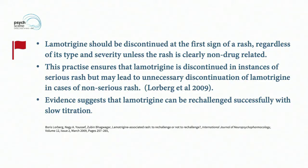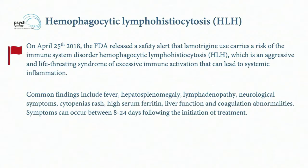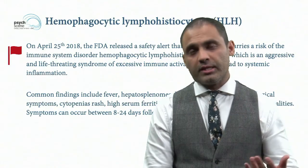One additional important point: there is a condition known as hemophagocytic lymphohistiocytosis (HLH). On April 25th, 2018, the FDA released a safety alert that Lamotrigine use carries the risk of this immune system disorder — an aggressive and life-threatening syndrome of excessive immune activation that can lead to systemic inflammation. Common findings include fever, hepatosplenomegaly, lymphadenopathy, neurological symptoms, cytopenias, rash, high serum ferritin, liver function abnormalities, and coagulation abnormalities. Symptoms can occur between 8 to 24 days following initiation of treatment.